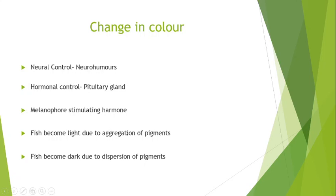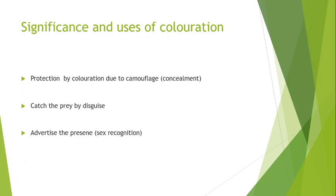So in this slide we have already discussed how the mechanism is controlled by neurons, nerves and hormones to change the color of fish. Then what is the significance and use of these coloration patterns? First of all it is most important in the protection of the fish by concealment, that is also known as camouflage.